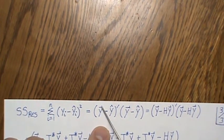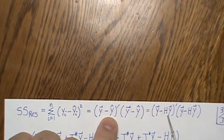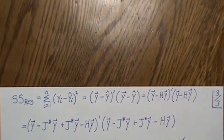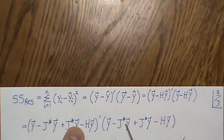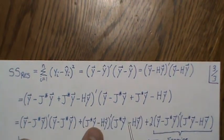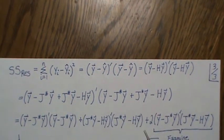Now for the matrix derivation: the residual sum of squares is (y - y-hat)^T*(y - y-hat) = y^T*(I - H)*y, since y-hat = H*y. We add and subtract J_star*y (the vector of group means) twice, just as we did in scalar notation. Multiplying out, we get three groups: the first group, the second group, and the cross product terms.